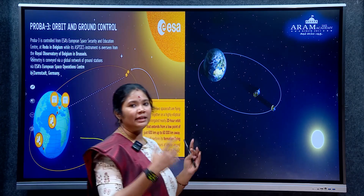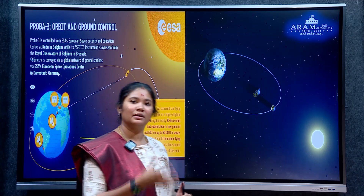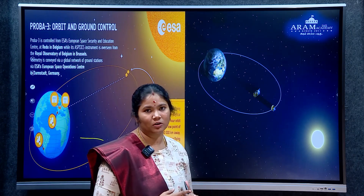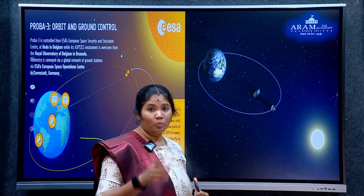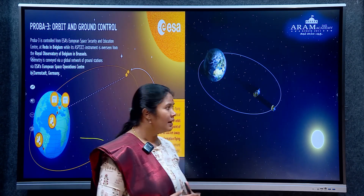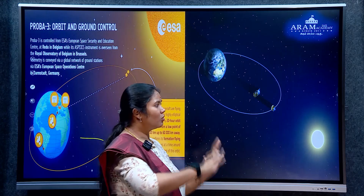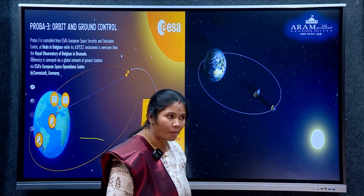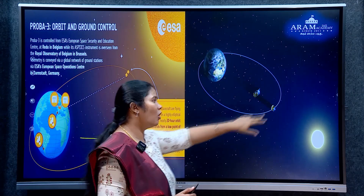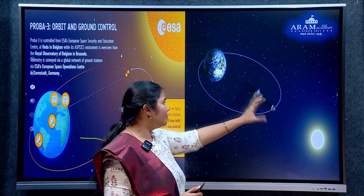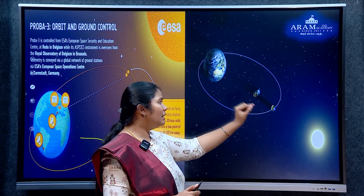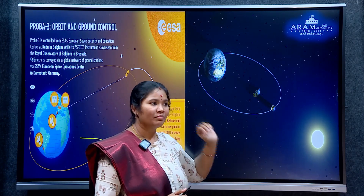This Proba 3 mission is launched from India. ISRO used the PSLV-C60 launch vehicle. This is already after Proba 1 and Proba 2. India is involved in this launch — that is our role. The two satellites are placed very precisely at a 150-meter distance from each other in orbit.